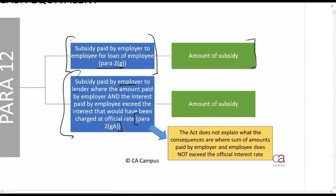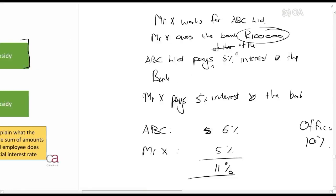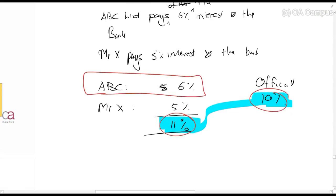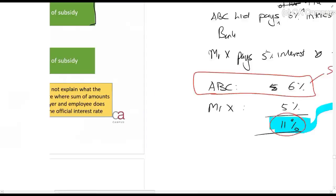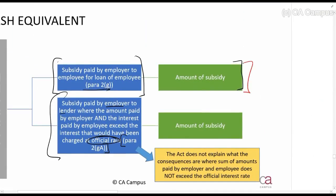What this rule says is: what is the official interest rate? If the official interest rate is, say, 10 percent, and you look at the total paid by the employer and the employee — that's 11 percent — and that total exceeds the official interest rate, then the amount paid by the employer (six percent) is treated as a subsidy. If it's a subsidy, you simply add it to your income.